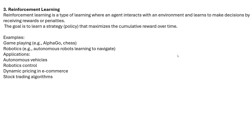Other unsupervised learning examples include recommender systems and document clustering. The third type is reinforcement learning, which is widely used. It is a type of learning where an agent interacts with an environment — like playing with robots — and learns to make decisions by receiving rewards or penalties, aiming to maximize cumulative rewards over time.